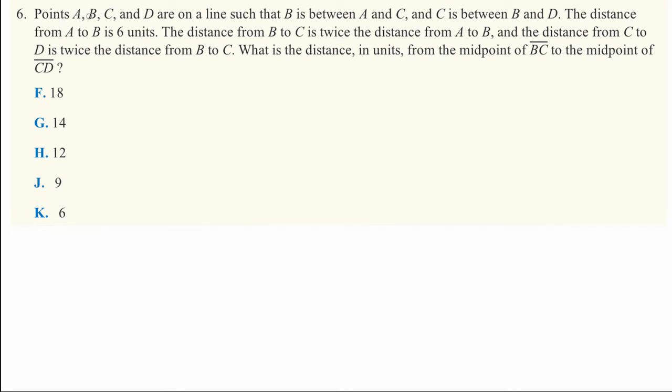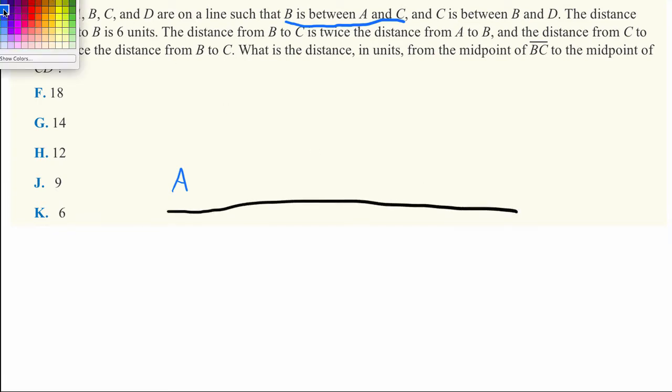So let's begin with the clue B is between A and C. Let's go ahead and draw out a line. So there's a line here, and A is on it. And then B is between, and C is on it, and B is somewhere between them. We don't know how far.